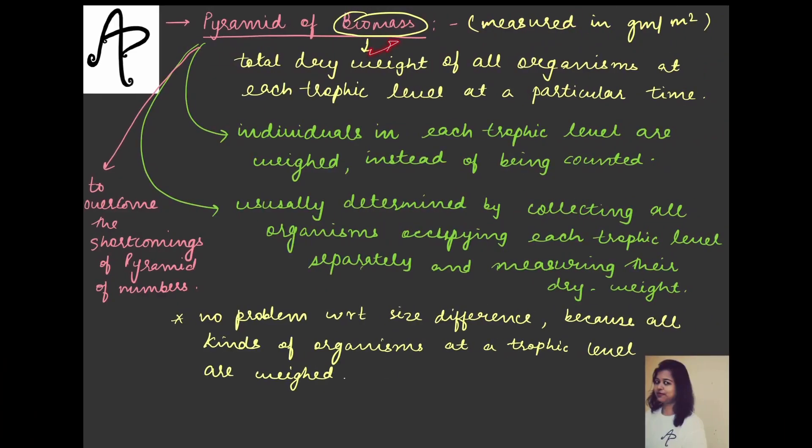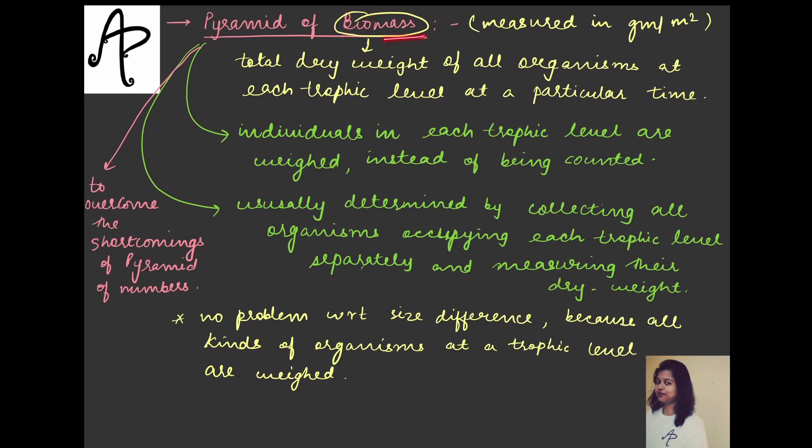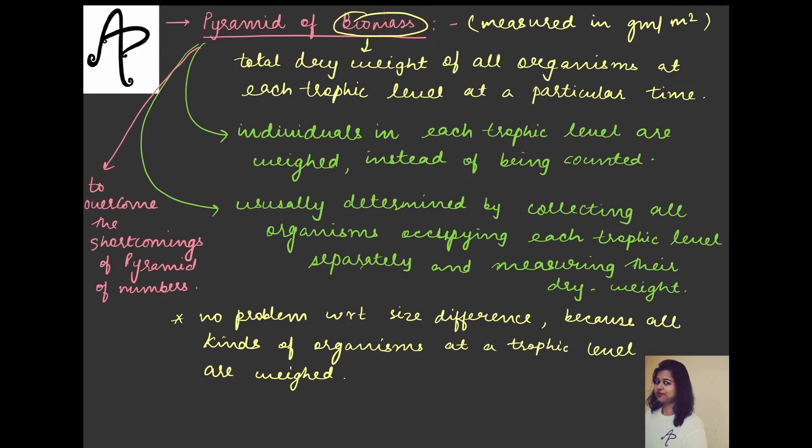Now we will talk about the pyramid of biomass. To understand this, we will have to understand what is this term biomass. Bio is basically used for living. And mass relates to the total dry weight of all organisms at each trophic level at a particular time. So it is basically about the dry weight of the organisms. The definition you can remember, and that too it is about each trophic level. At a particular time, what is their dry weight?